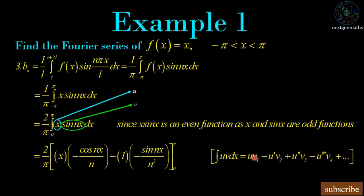We set u = x and v = sin(nx). In the integration by parts formula, keep x as is and integrate sin(nx) to get −cos(nx)/n. In the second term, differentiate x to get 1, and integrate −cos(nx)/n to get −sin(nx)/n². Evaluate the result between limits 0 to π.